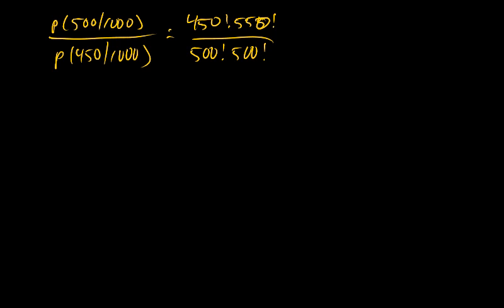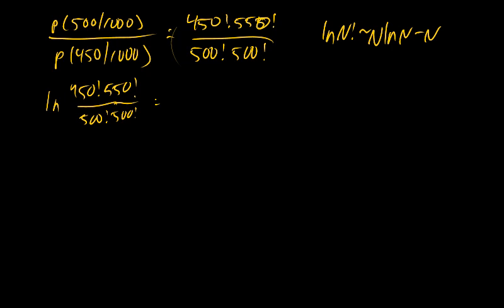What we do is we take the log of these numbers. We're going to use natural log so we can use Stirling's approximation. And if you recall, Stirling's approximation says that the log of a factorial is approximately equal to n log n minus n. So when we take the log of this, the log of 450 factorial times 550 factorial over 500 factorial times 500 factorial, the division becomes a subtraction, the multiplies become an addition, and we get